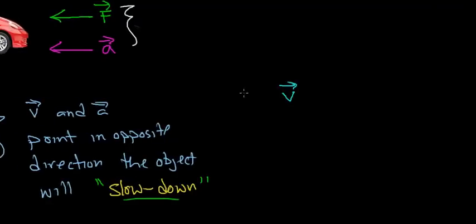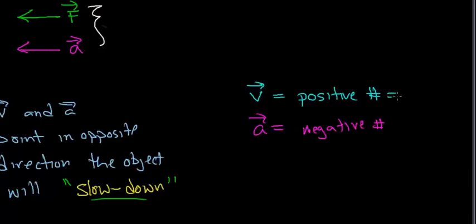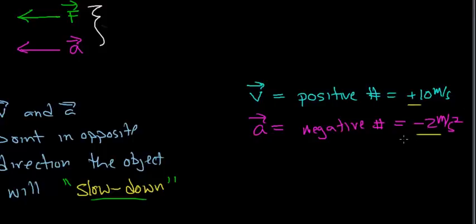Let's reinforce this idea. Notice the velocity vector is pointing in the positive direction, so the velocity will be a positive number. And in this case the acceleration is pointing in the negative direction, so the sign of the acceleration is going to be negative. For example, if we have an initial velocity of plus 10 meters per second and an acceleration of negative 2 meters per second squared, notice the sign of the velocity is different from the sign of the acceleration, and so the velocity is going to decrease — the object is going to slow down.